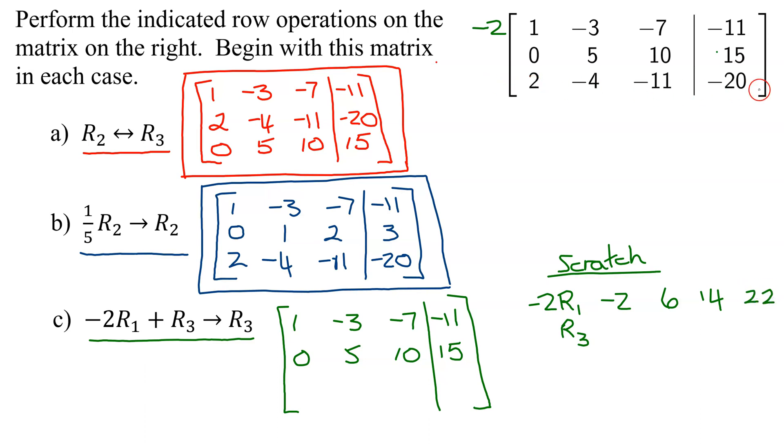We're going to write row 3 below it. So I'm going to get 2, negative 4, negative 11, and negative 20. And now add them up.